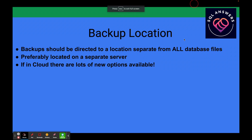Backups should be directed to a location that is separate from your database files. You don't want your backups sitting on the same drive as the database files they're supposed to protect — if you lose that drive, you lose both your database and your backup. Preferably, direct backups to a completely separate server, or mount a drive from another server. In AWS, there's something called Storage Gateway where you present a volume to your server that is actually housed on another server in AWS, or you can use a UNC path to direct your backup.